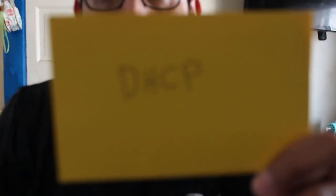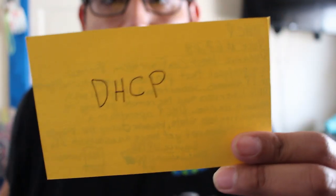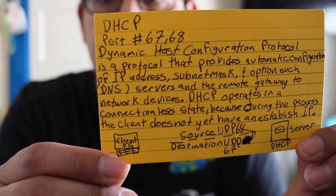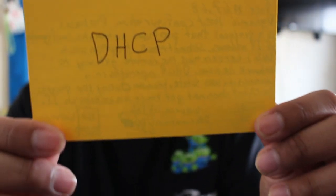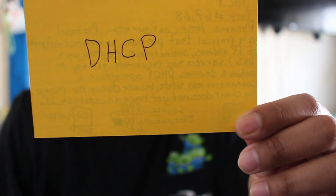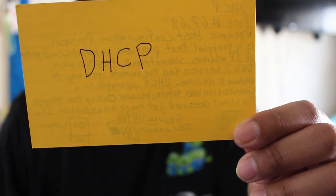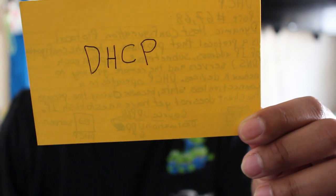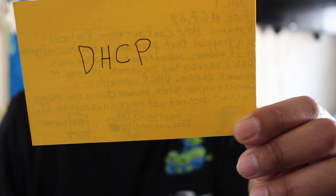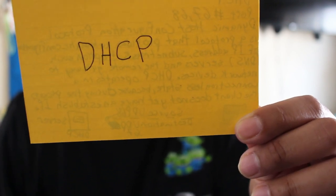The first one is DHCP — Dynamic Host Configuration Protocol. That is port 67 and 68. DHCP is a protocol that provides automatic configuration of an IP address, subnet mask, optional DNS service, and the remote gateway to the network device.